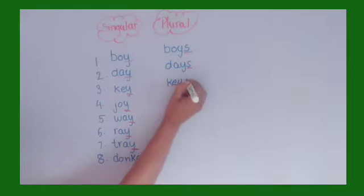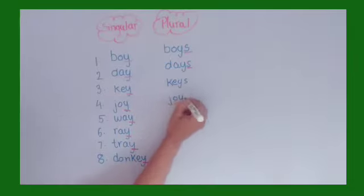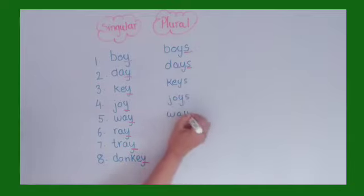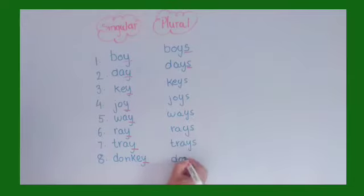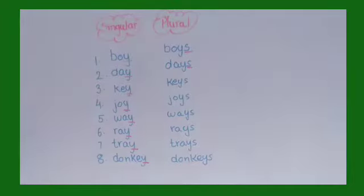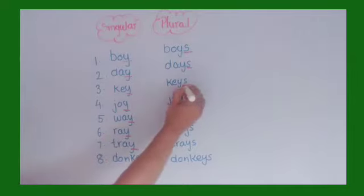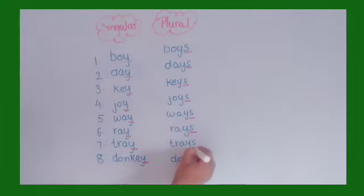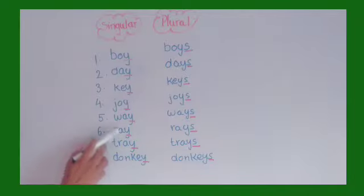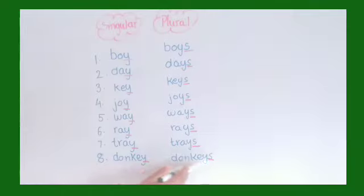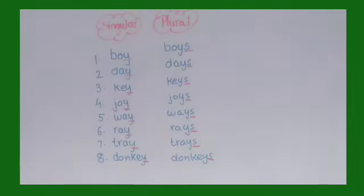Key becomes keys. Joy becomes joys. Way becomes ways. Ray becomes rays. Tray becomes trays. Donkey becomes donkeys. So here you see, to change from singular to plural we add only S. If you see a vowel before Y, you simply add S to the word to make it plural.